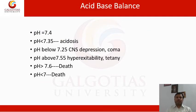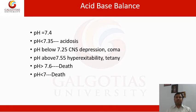When acidity or basicity increases, the following effects occur. Normal blood pH is 7.4. When pH falls below 7.35, it is called acidosis. When pH drops below 7.25, central nervous system depression and coma occur. When pH rises above 7.55, hyperalkalinity and tetany occur. When pH goes above 7.8 or falls below 7.0, it causes death.